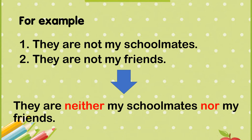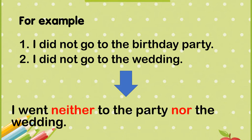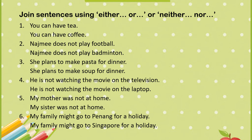Notice that both original sentences are negative — 'are not' — so both are negative sentences. When combining negative sentences, we use neither/nor. Another example: 'I did not go to the birthday party' and 'I did not go to the wedding.' Combined: 'I went neither to the party nor the wedding' — saya pergi bukan ke party dan bukan juga ke majlis perkahwinan itu.